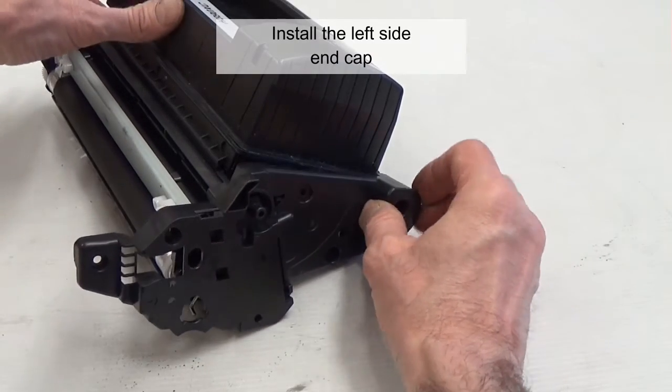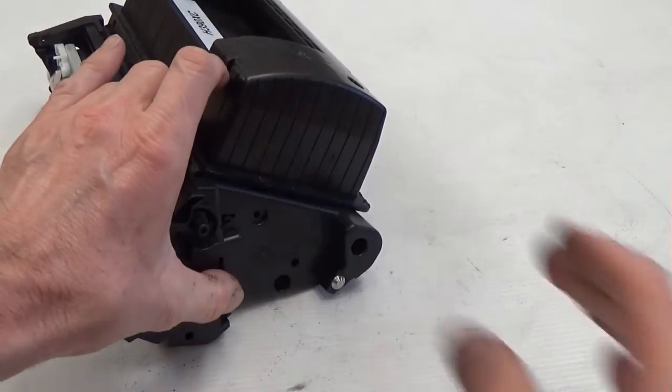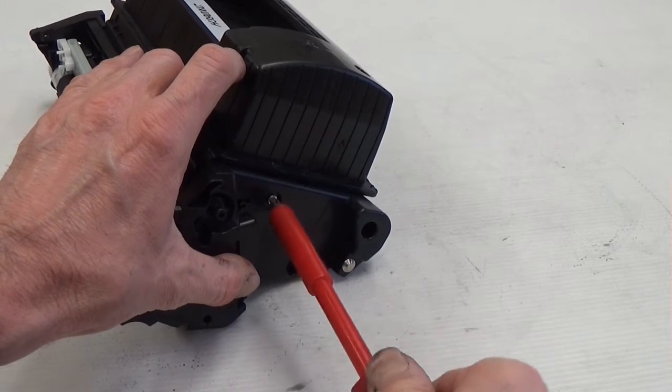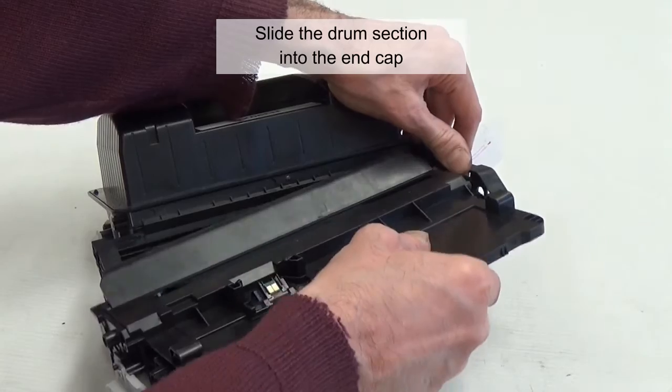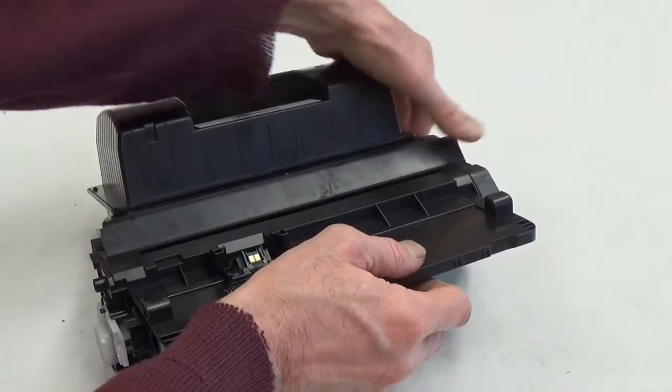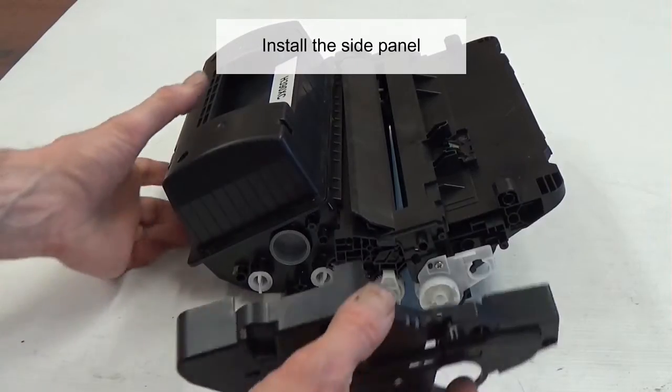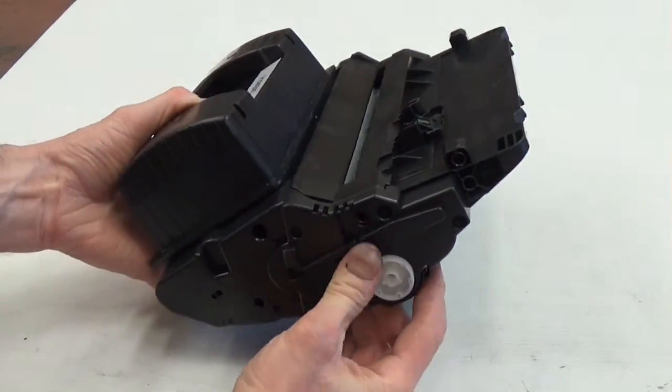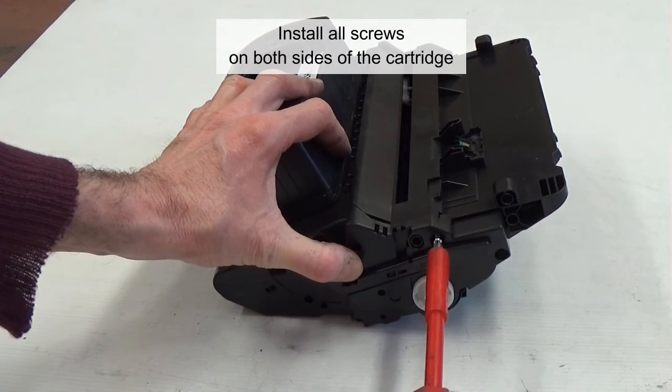Install the left side end cap. Install one screw. Slide the drum section into the end cap. Install the side panel. Install all screws on both sides of the cartridge.